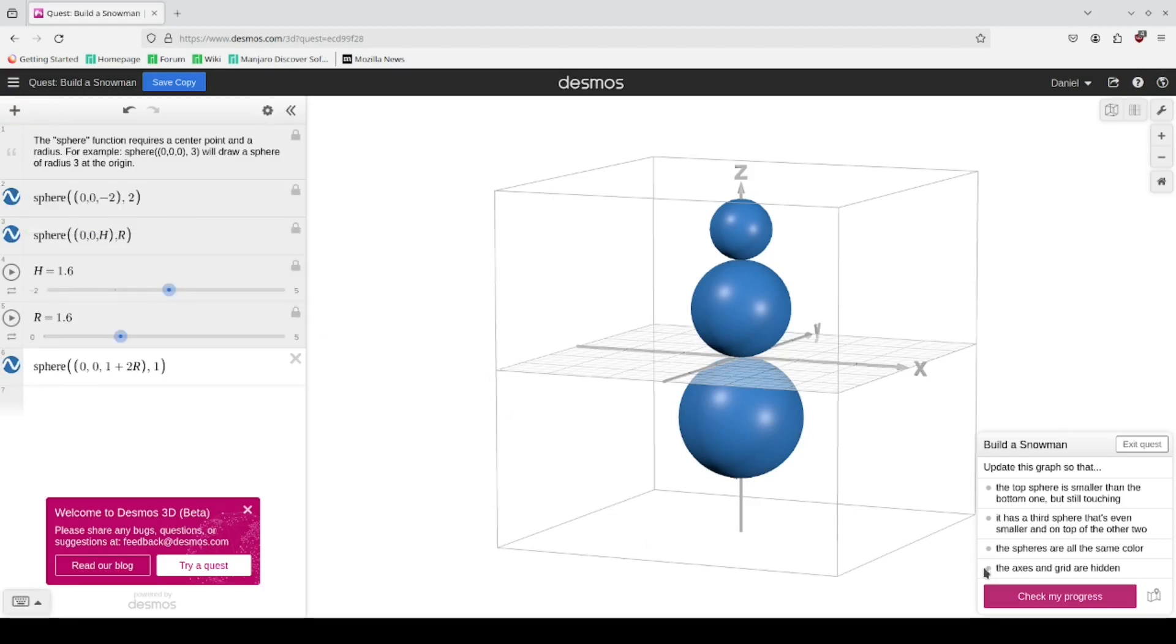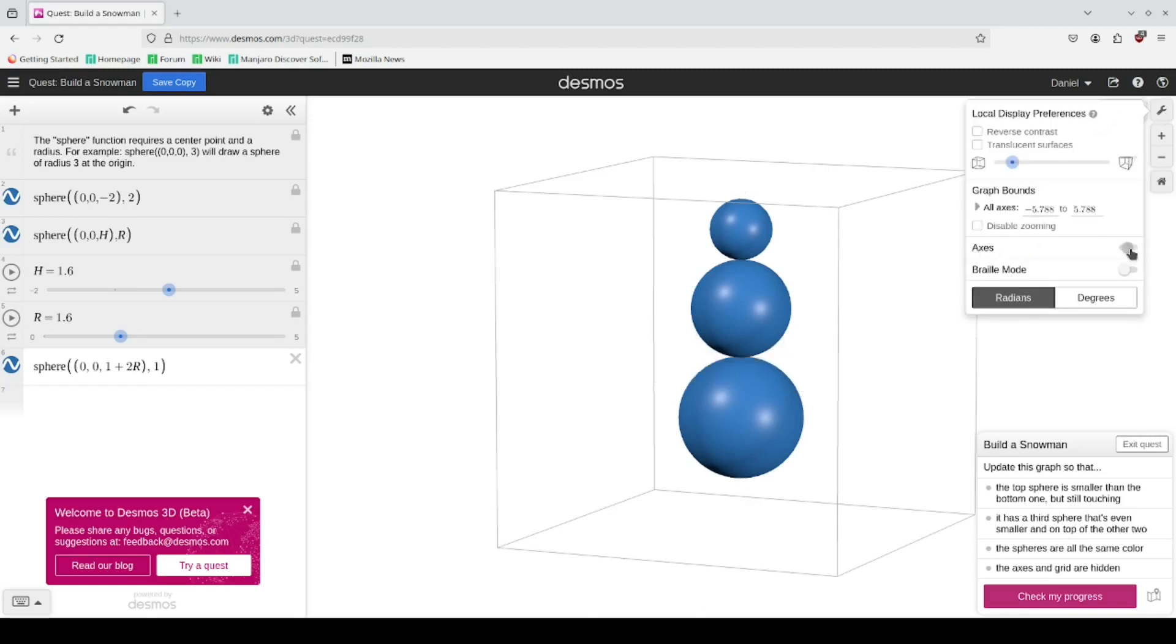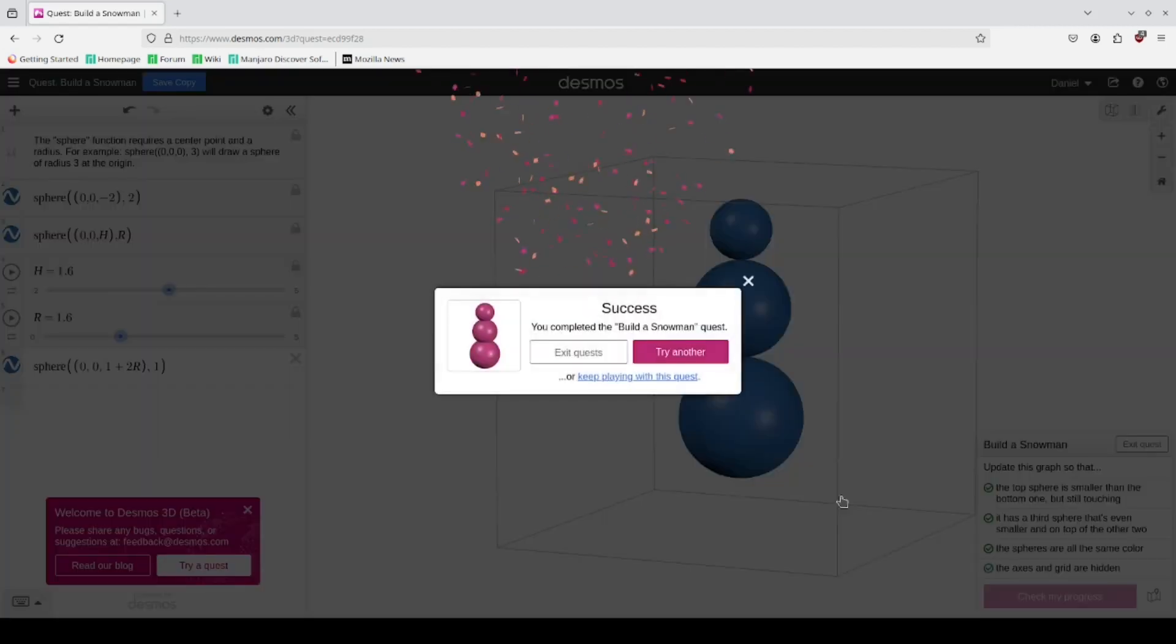And for the final one here, they want the axis and grid to be hidden. To do that, top right there's a wrench that is your settings. For axis you would turn this one off. And when you check the progress, you should see all four boxes marked off.